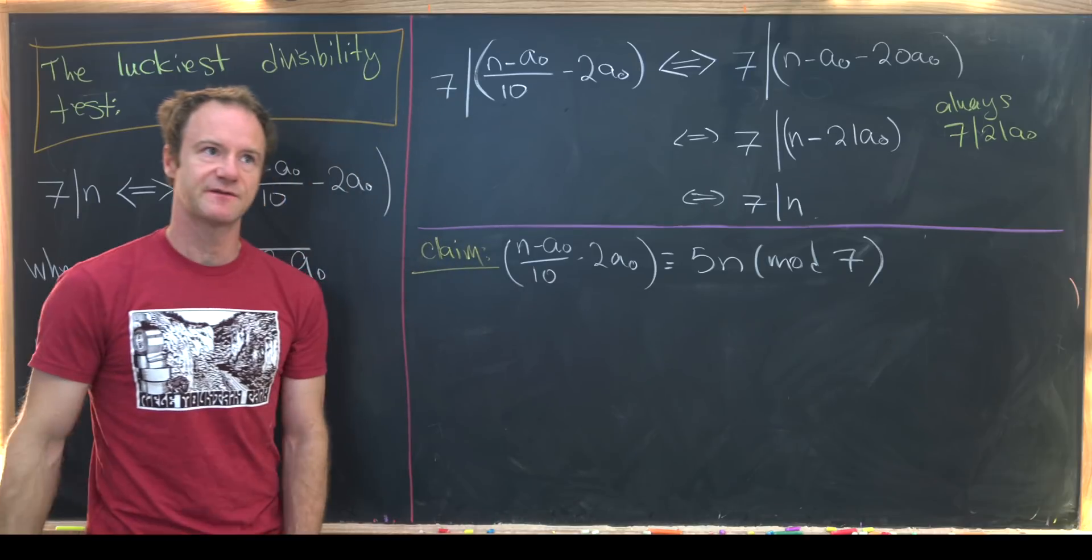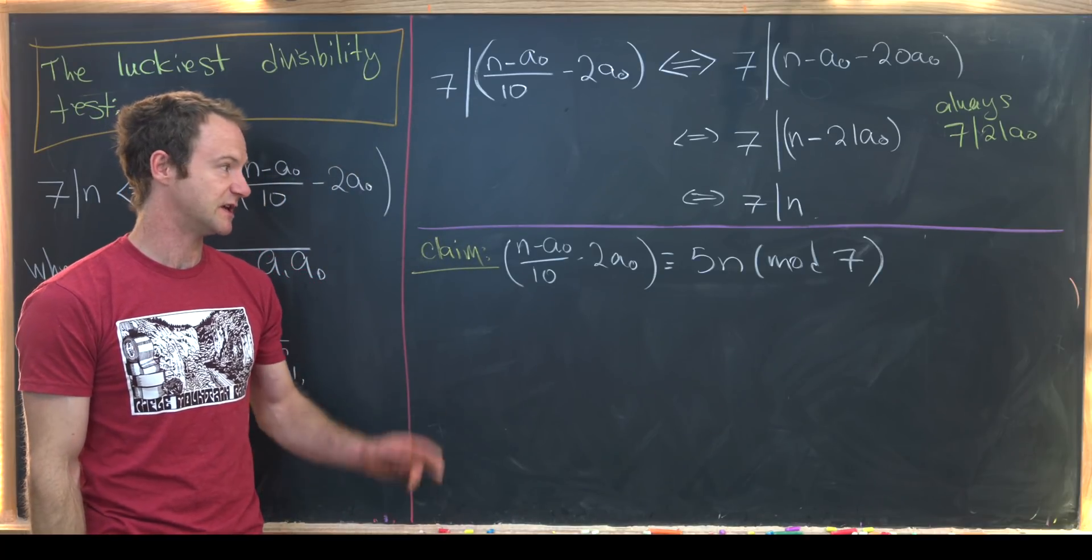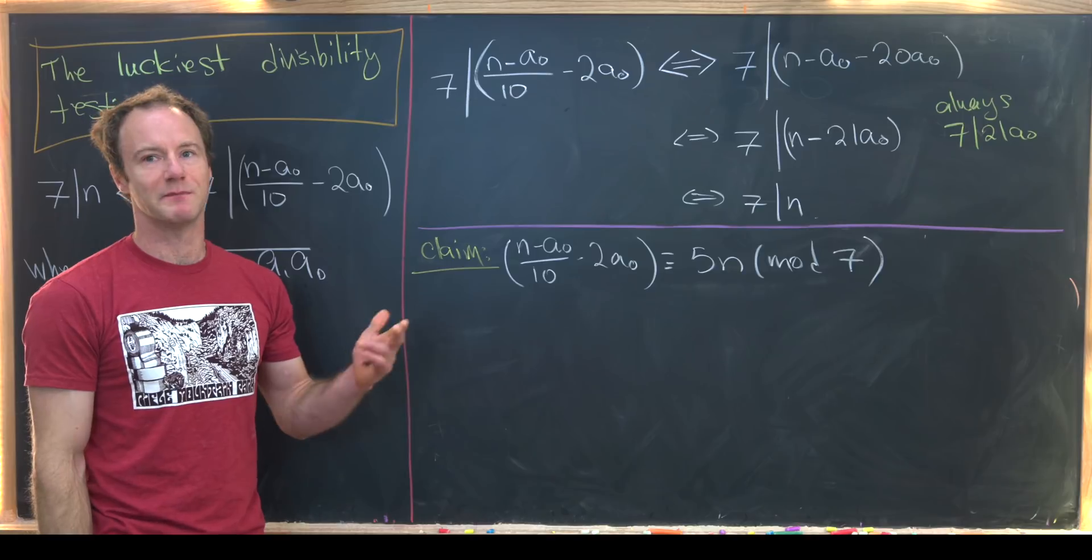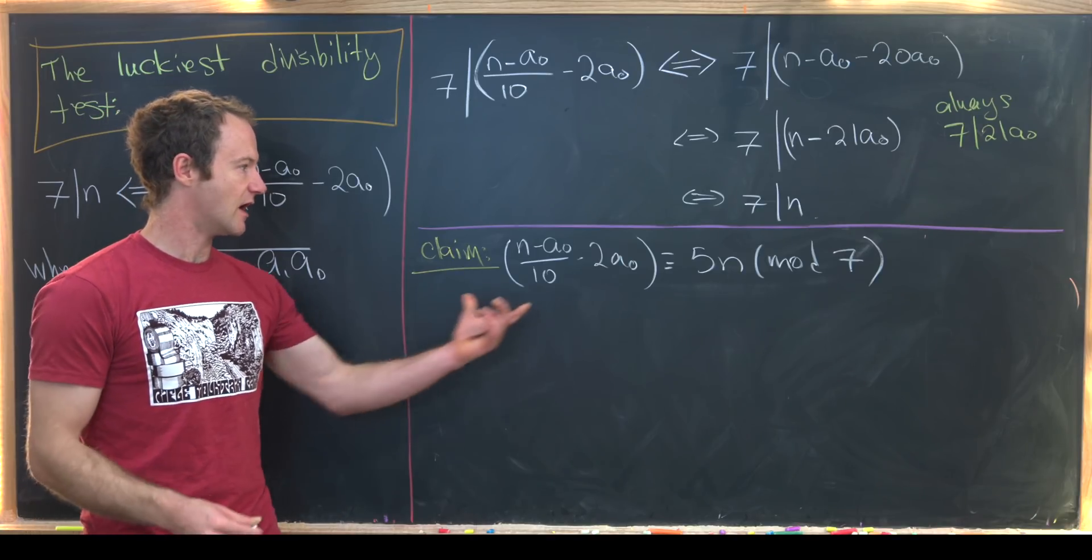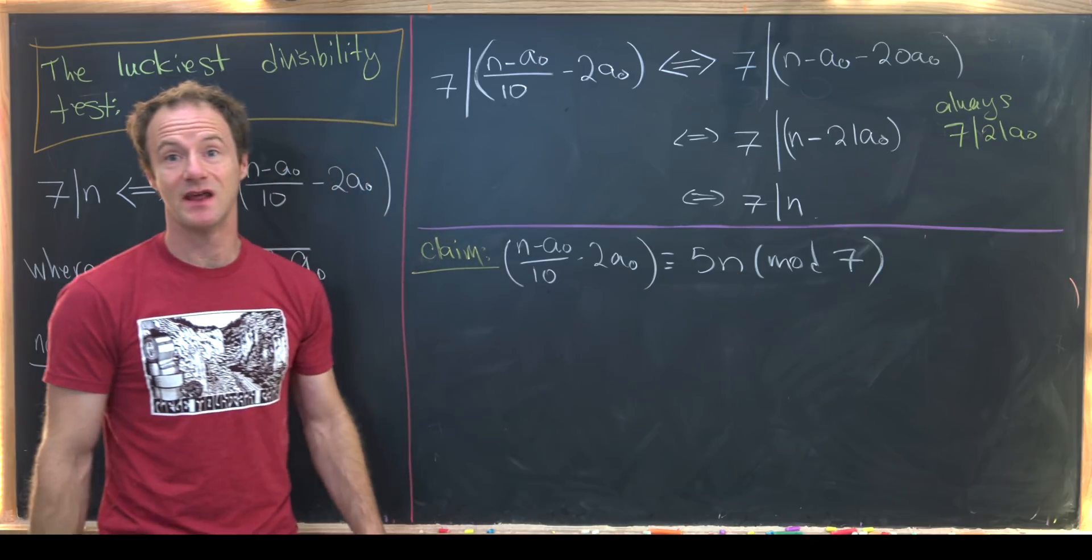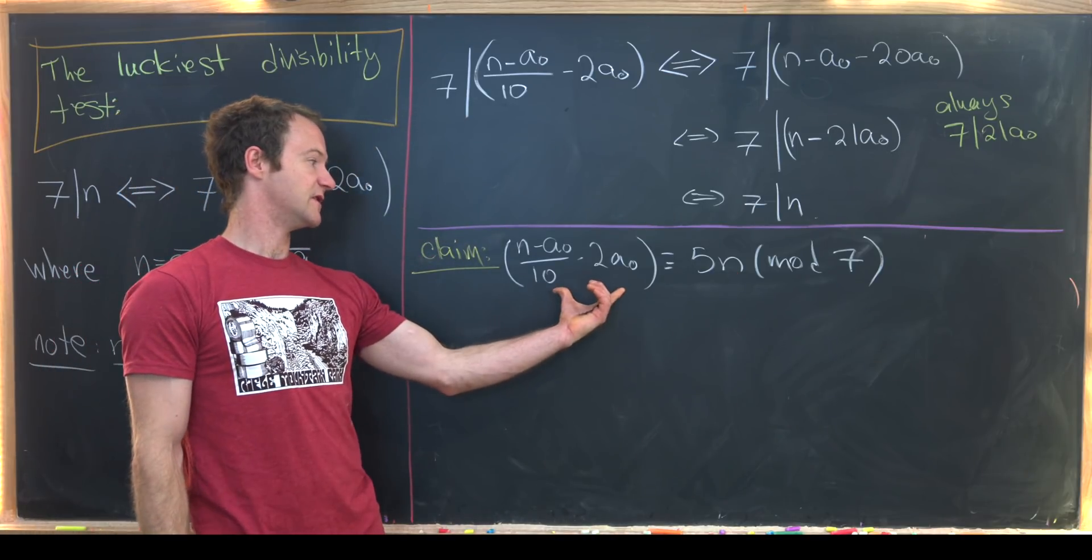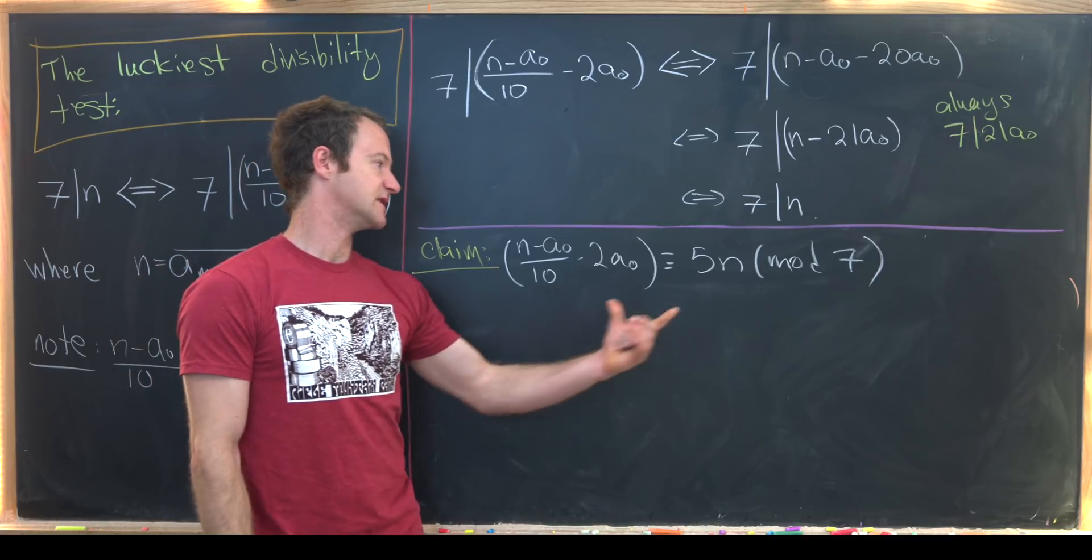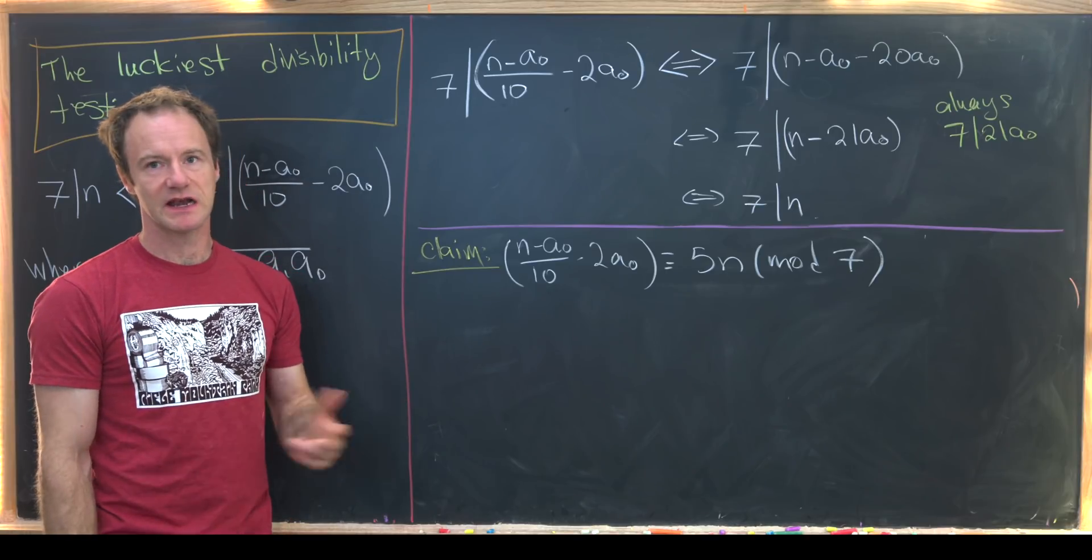So this is a little bit different than other divisibility tests when you're working with modular arithmetic because usually you keep the remainder exactly the same. But here the remainder of this guy right here and the number n may not be the same. So notice the remainder of this is going to be the same thing as the remainder of dividing 5n by 7 not n by 7.